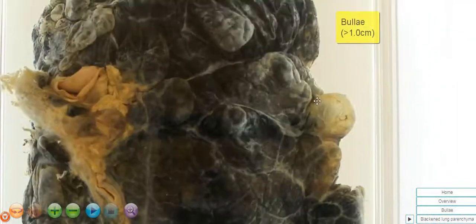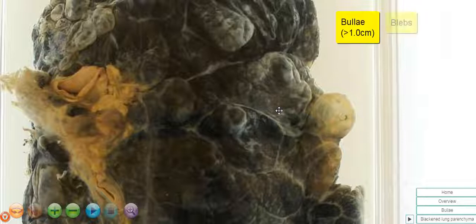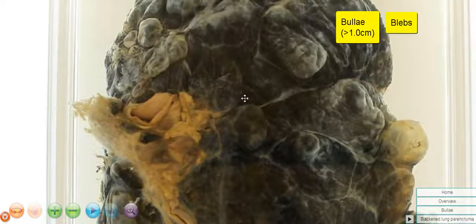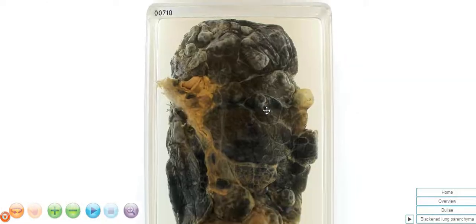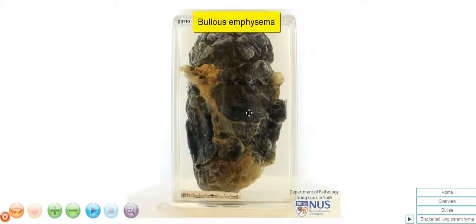These are known as bullae if they are more than 1 cm or blebs if they are less than 1 cm in diameter. This is an example of bullous emphysema.